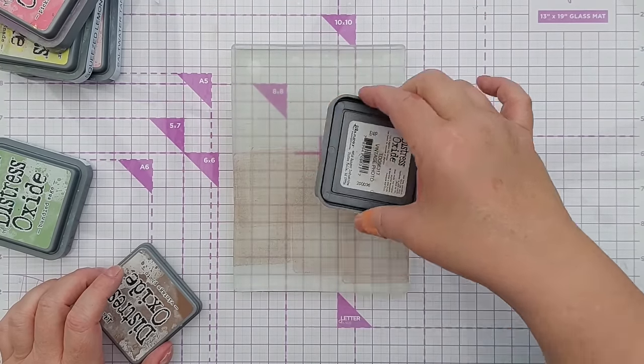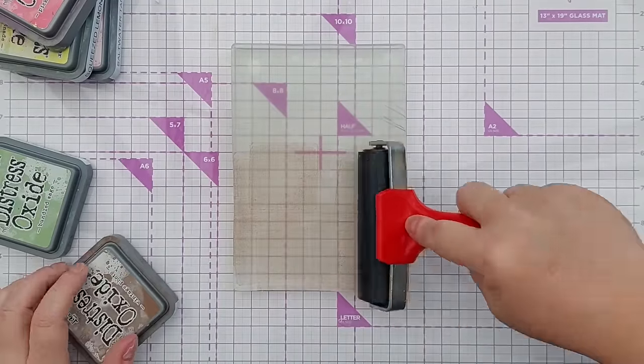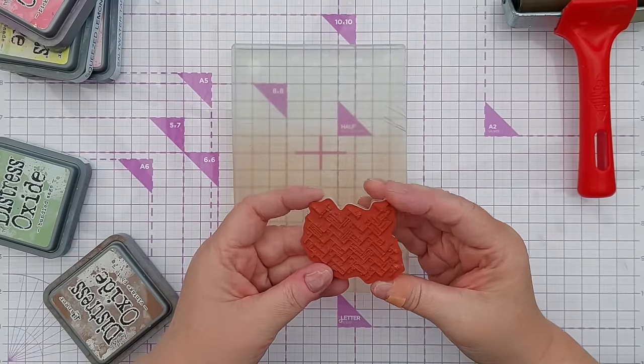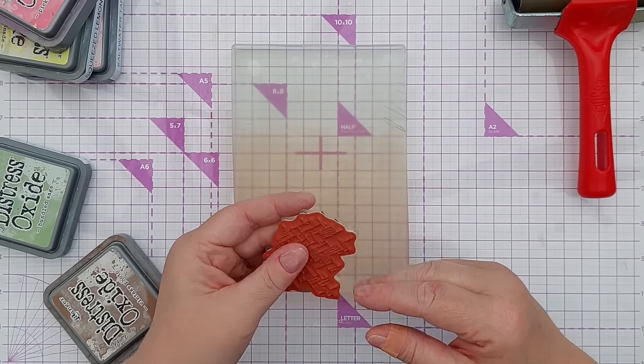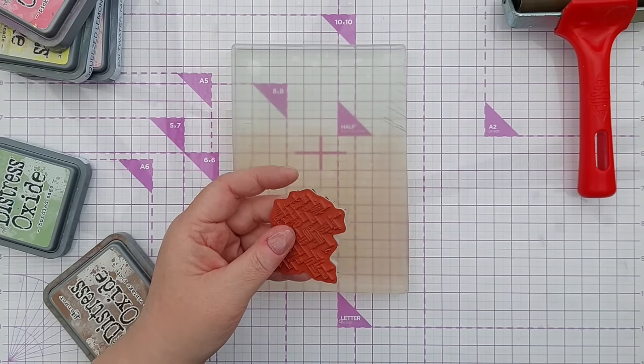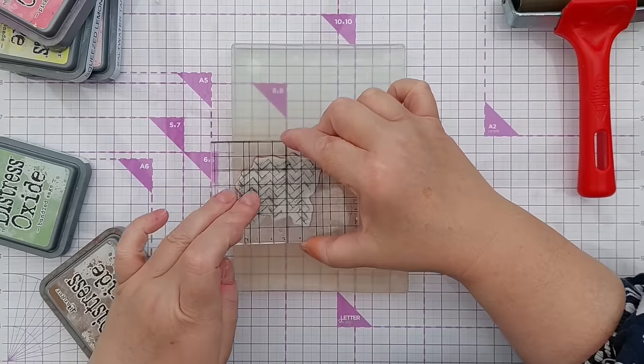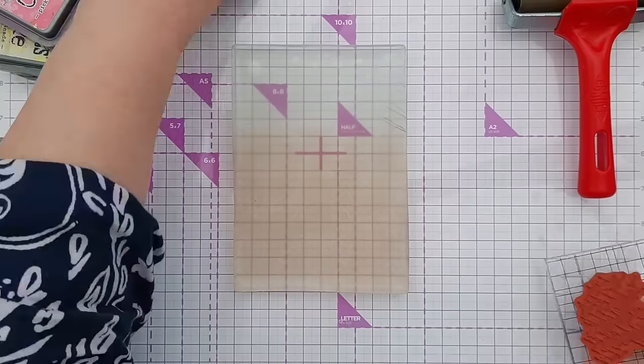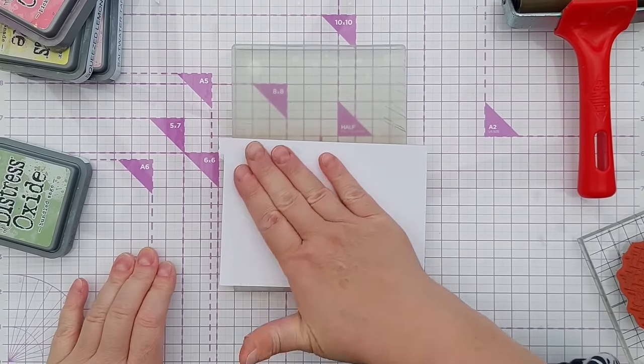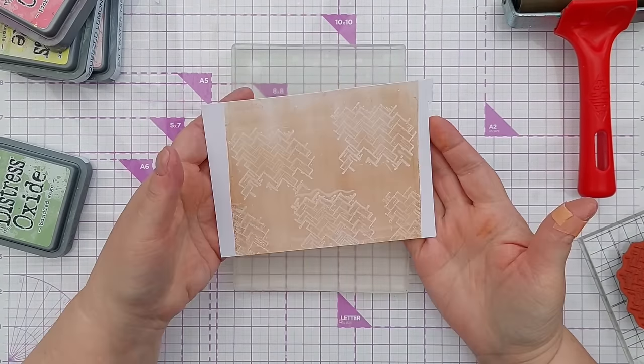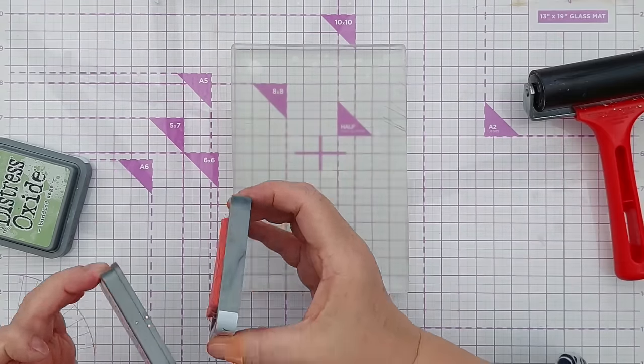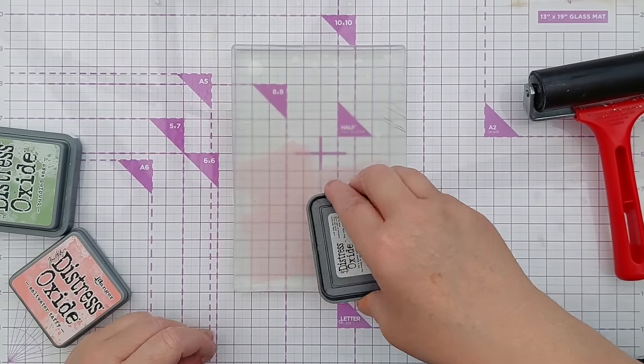With some vintage photo, and I've got this rubber stamp that has a kind of grungy brickwork pattern on it and I'm gonna stamp that on here. There you go, a vintage photo brickwork pattern.